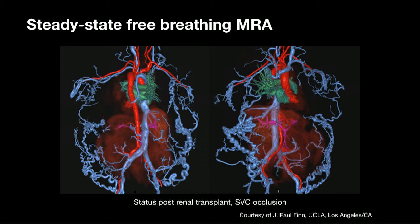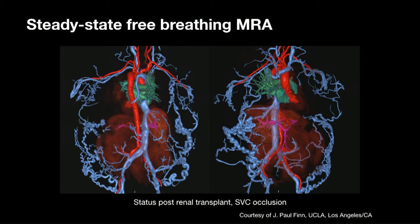Veins are really useful and difficult to image with other modalities. Here we can see a patient with a transplant kidney in the pelvis who, through previous venous access, has lost their SVC and developed all these collaterals.